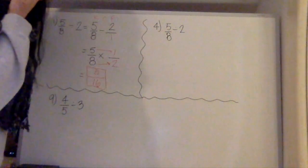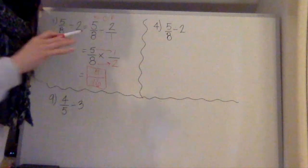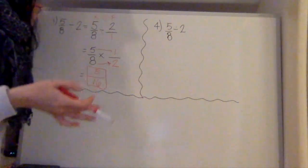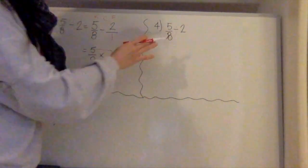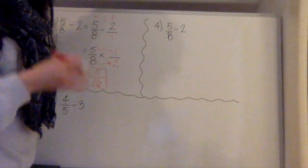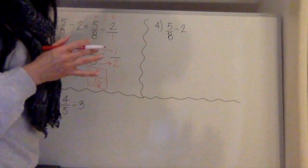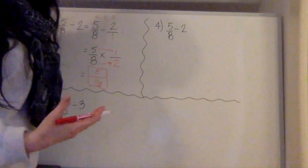For number 4, we're skipping to the next chunk of questions. You can do 2 through 3 on your own. For number 5, they're asking us just to rewrite the problem as a multiplication by the reciprocal. So we're doing the keep, change, flip, but we're not solving.